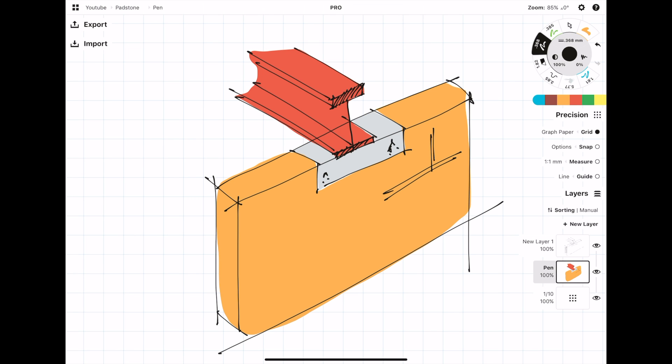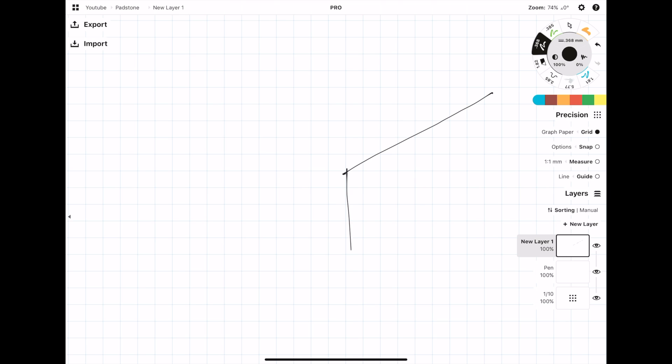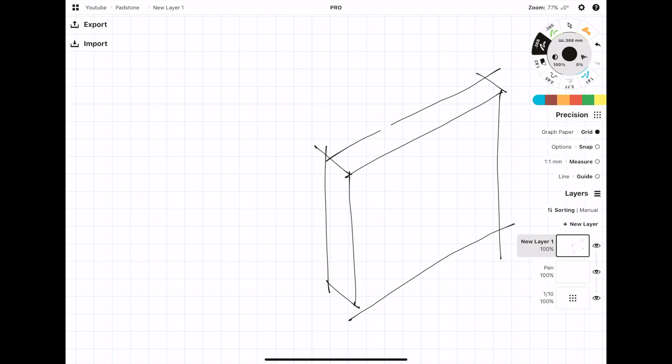There are basically two configurations of how a steel beam can be bearing onto a wall. The first way is what I've shown here where the beam is spanning perpendicular to the wall. The other way is where the beam is spanning in plane of the wall and is typically bearing at the end of the panel. This is very common when you're creating an opening in an existing wall.